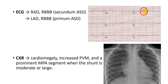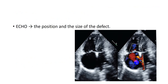On chest X-ray, there is cardiomegaly due to right atrial and right ventricular dilatation, increased pulmonary vascular markings due to increased pulmonary blood flow, and a prominent pulmonary artery segment when the shunt is significant — in moderate to large shunt.